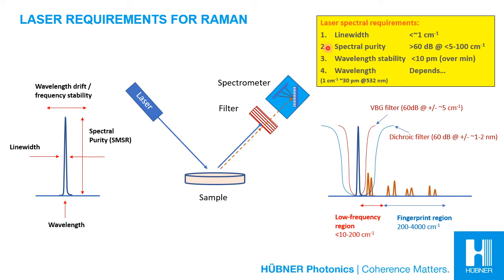Then there is spectral purity, which means how far down from the laser peak you must go to find any side-mode emission and how close it is to the main peak. Since Raman scattering efficiency is very weak, there must be no emission from the laser source at a level of at least 60 dB down from the laser peak in the region where the Raman signals are to be detected.